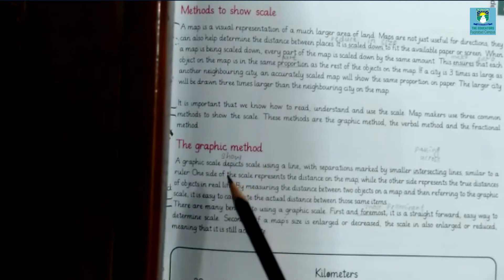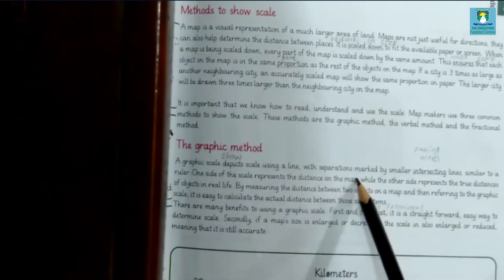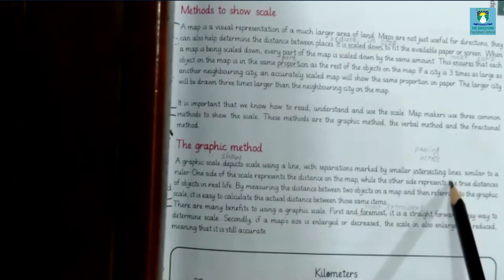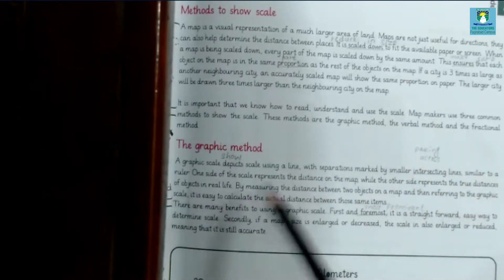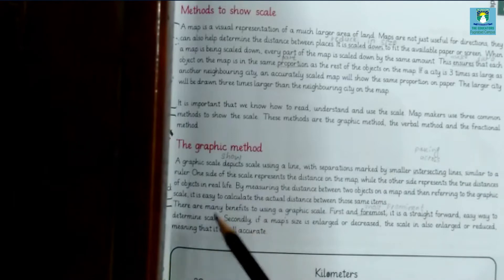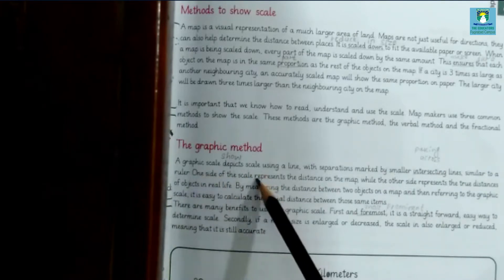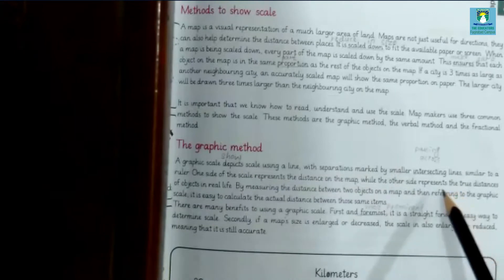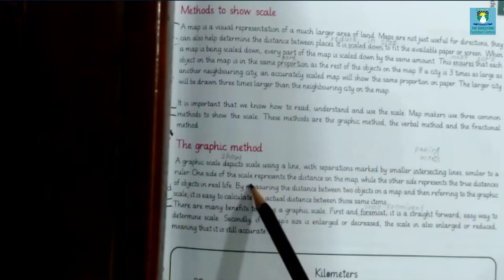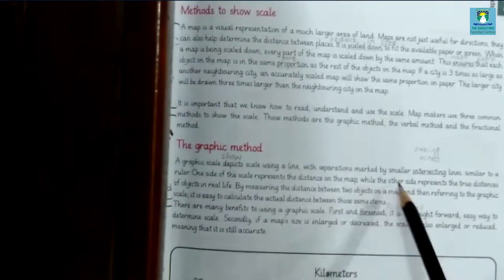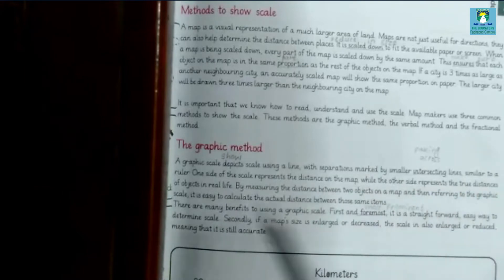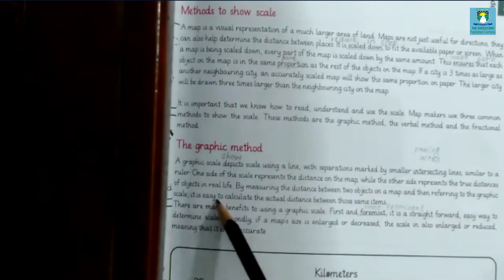First is the graphic method. A graphic scale depicts — meaning shows — the scale using a line with separations marked by smaller intersecting lines, similar to a ruler. One side of the scale represents the distance on the map, while the other side represents the true distance of objects in real life.